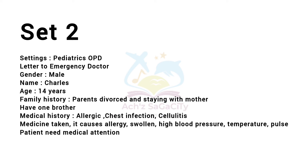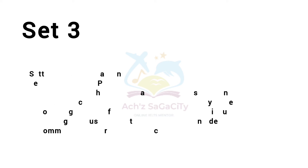The second set: the setting was pediatric — a letter to an emergency doctor. The patient's gender was male, name Charles, age 14 years. Family history: parents were divorced and he was staying with his mother, and he has one brother. Medical history: allergic chest infection and cellulitis, medicine taken that causes allergies, high blood pressure, temperature, and pulse. The patient needs immediate medical attention, so we need to write a letter from pediatrics to the emergency doctor.